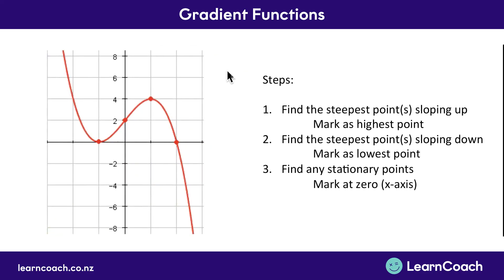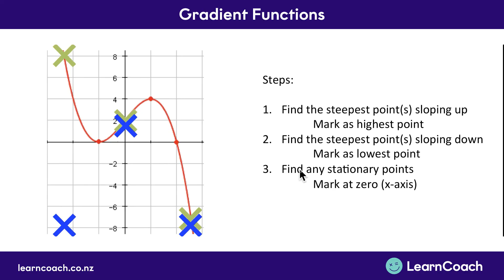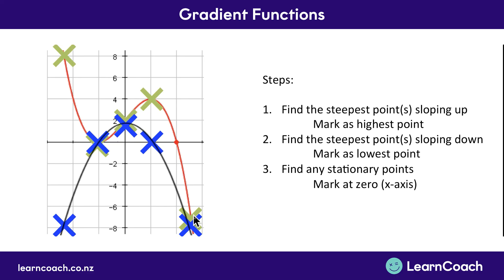Let's try one more. Find the steepest points sloping upward — there's only one and it's not very steep, so we don't put it very high as positive. Then find the steepest points sloping downwards — they're very steep, so we put them both as being very negative. Finally, look for the stationary points and mark them as zero on the axes. Draw a smooth line connecting all those crosses together and that's your gradient function. Sketching a gradient function always follows these steps and will show the smooth change of slope in your graph.